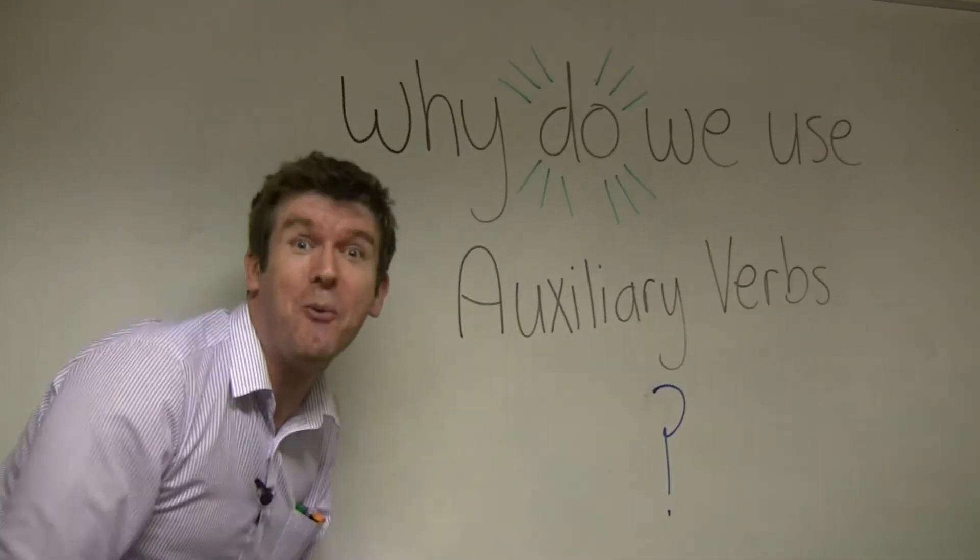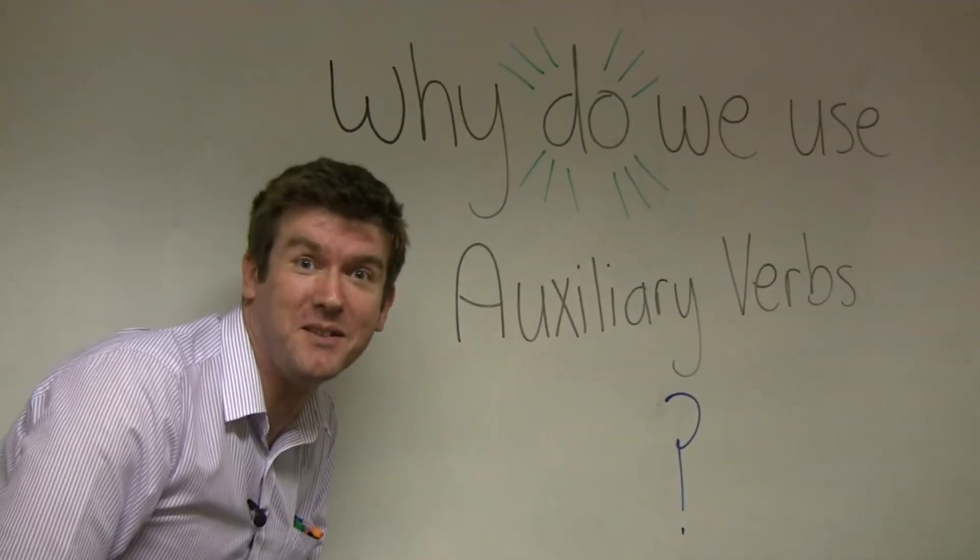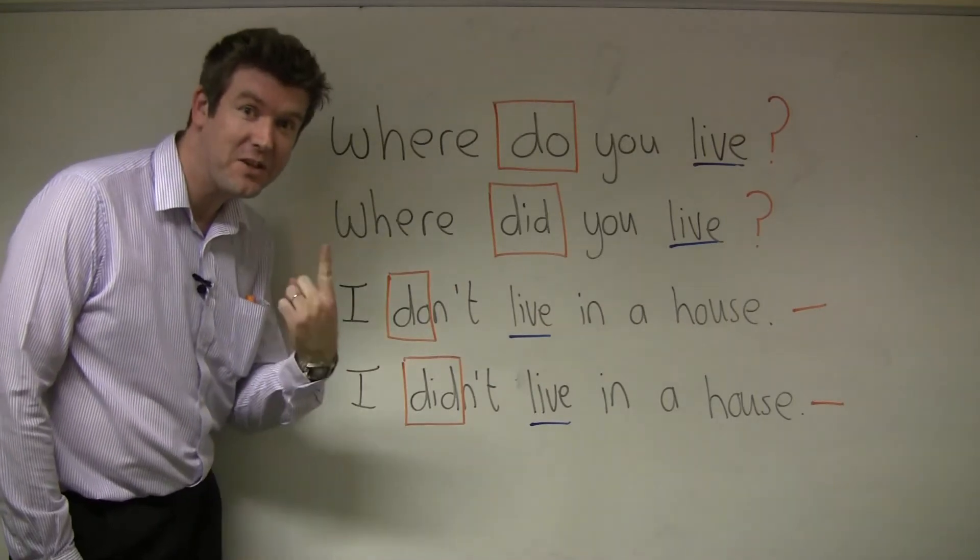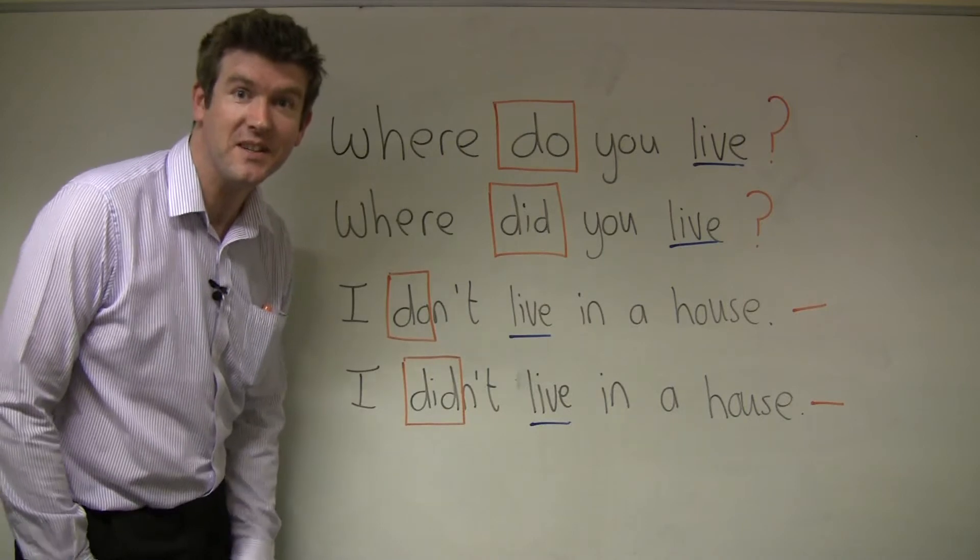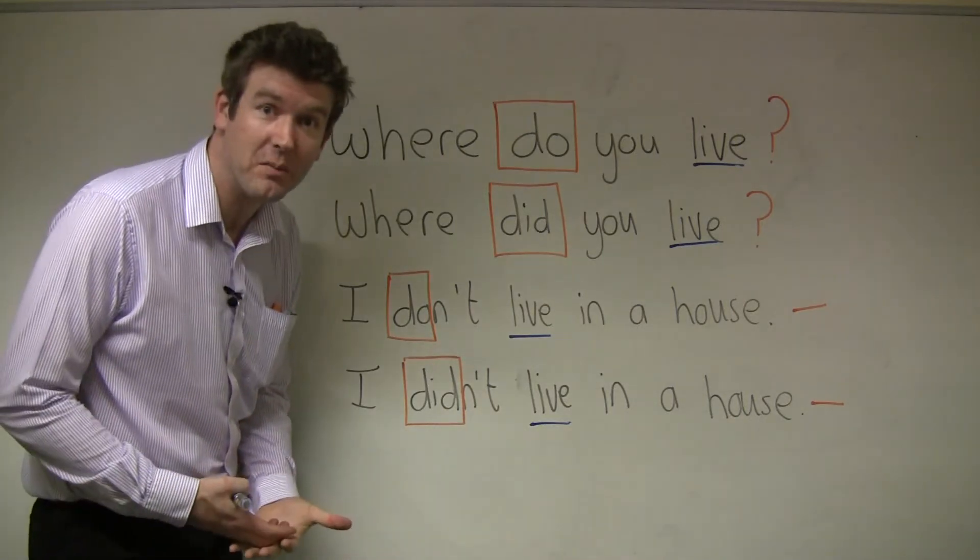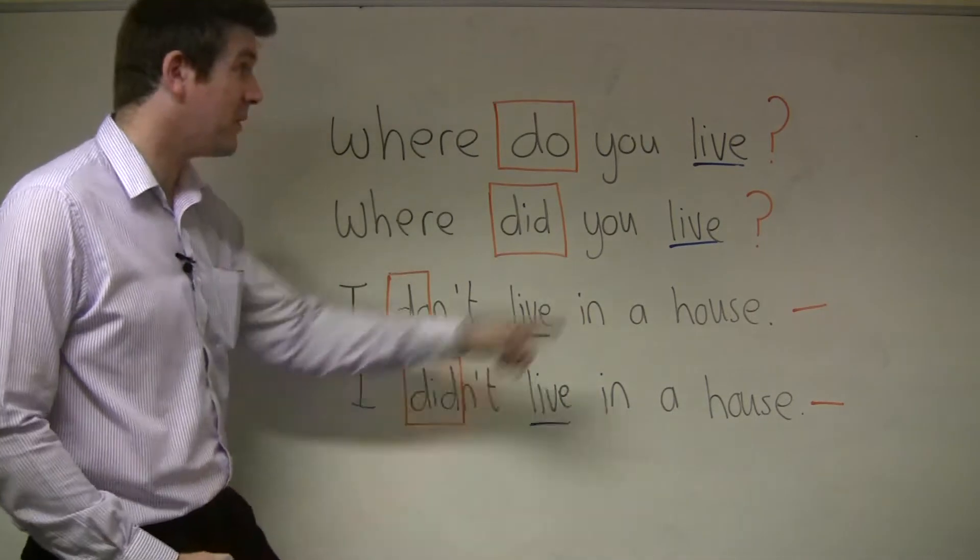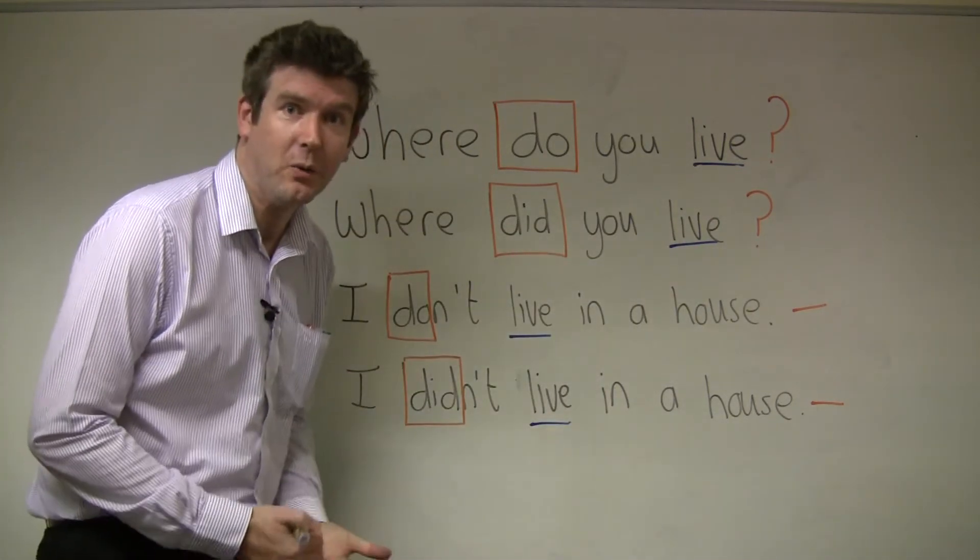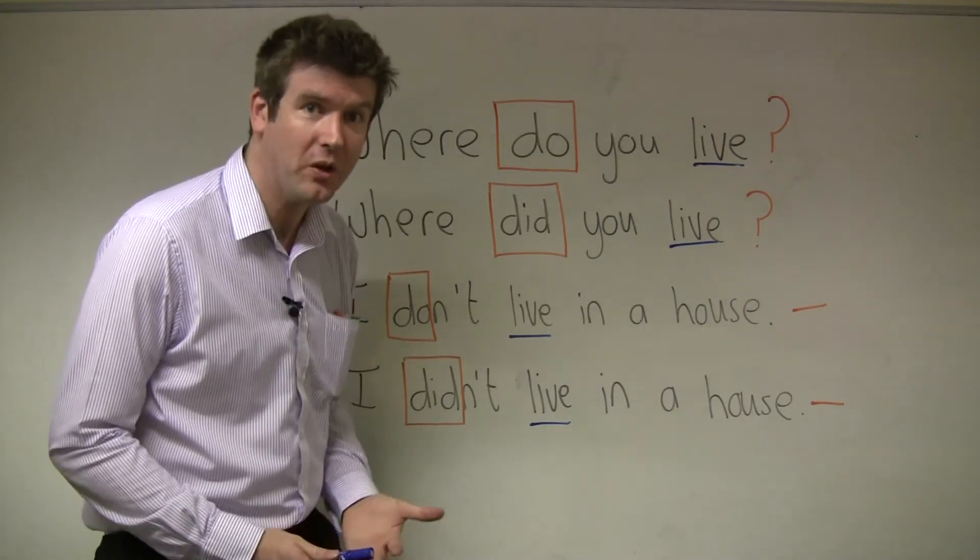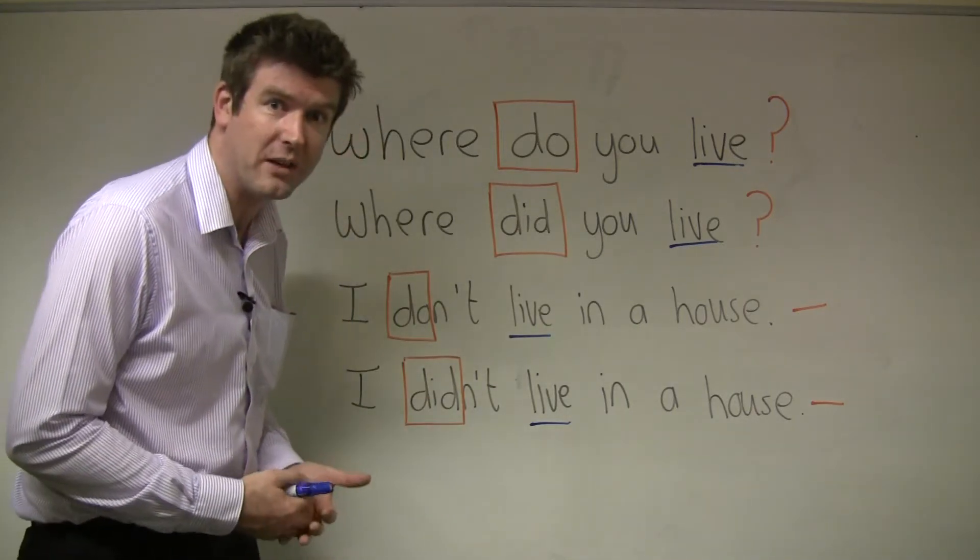Question number two: why do we use auxiliary verbs? Two reasons. The first one, if we have a question or we have a negative sentence then we use an auxiliary verb. Reason number two is if we have an important verb like live, speak, watch, listen, talk, then we have an auxiliary verb.